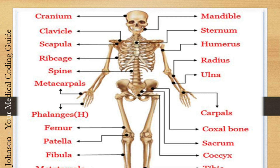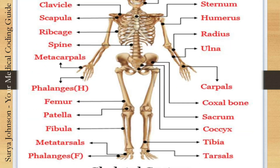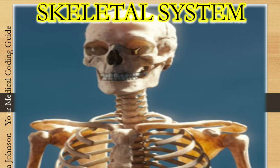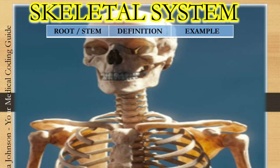You can see some common bone names displayed in the skeletal system: cranium, clavicle, scapula, ribcage, spine, radius, ulna, humerus, phalanges, carpels, femur, patella, fibula, metatarsal, tibia, phalanges, and tarsus. These are not the only skeletal bones — there are many more. We will now get into the root or stem words pertaining to the skeletal system.